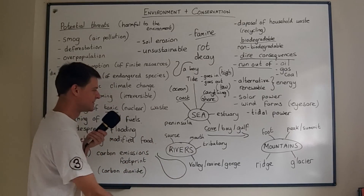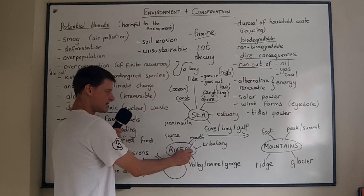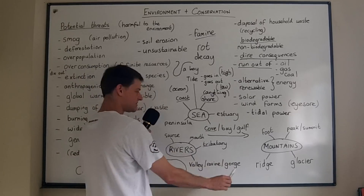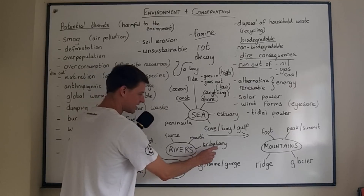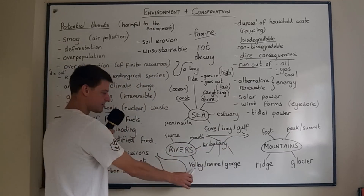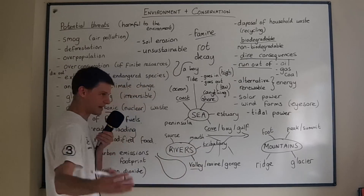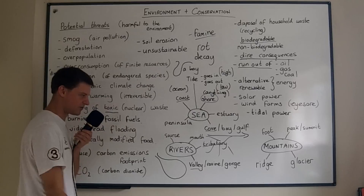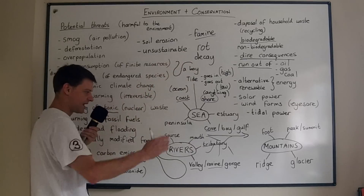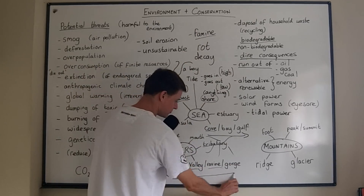Moving on to rivers: rivers have a source, which is where the water comes from, and a mouth, which is where it flows out into the sea. They also have tributaries — little rivers that come off the main river. A flat area of land between mountains is called a valley, but a river running between two high cliff edges would be called a ravine, and a very big ravine is called a gorge. They increase in size as we go.